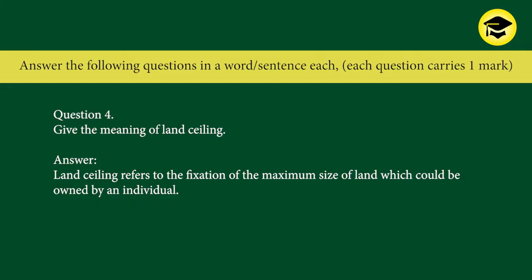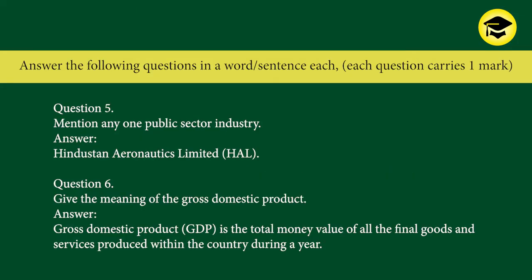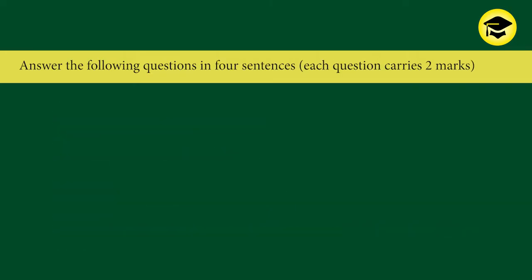Question 4: Give the meaning of land ceiling. Answer: Land ceiling refers to the fixation of the maximum size of land which could be owned by an individual. Question 5: Mention any one public sector industry. Answer: Hindustan Aeronautics Limited (HAL). Question 6: Give the meaning of Gross Domestic Product. Answer: GDP is the total money value of all the final goods and services produced within the country during a year.